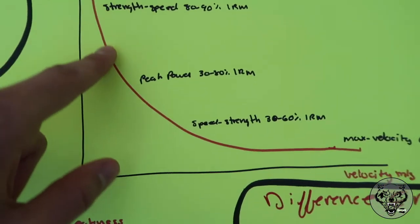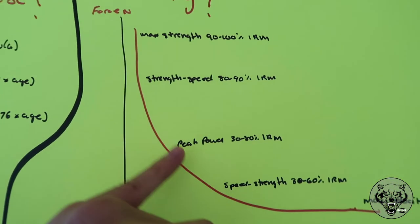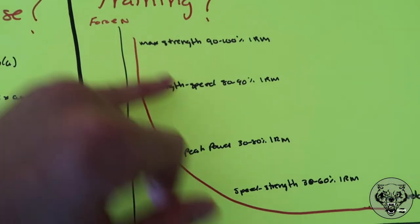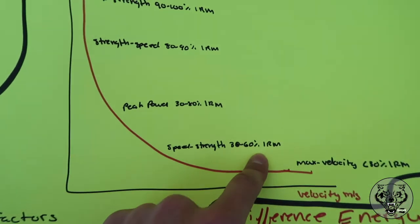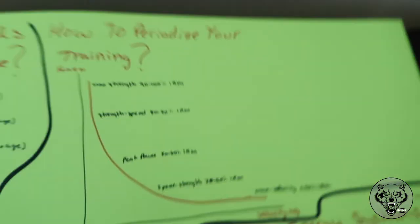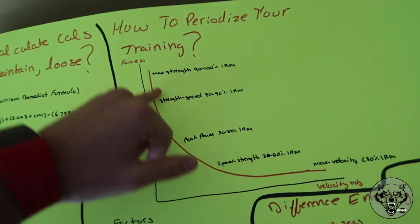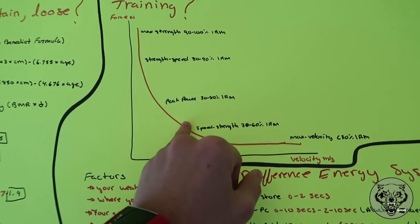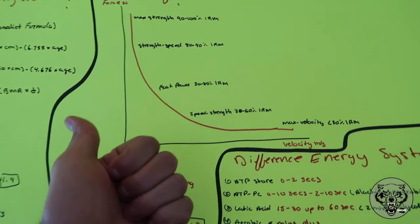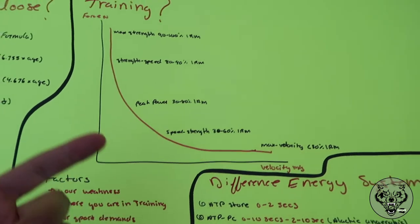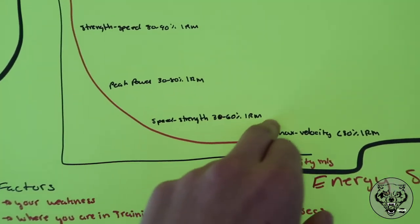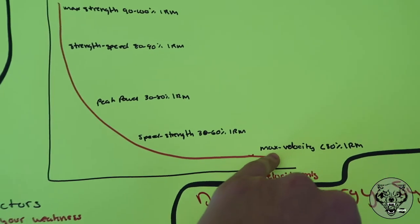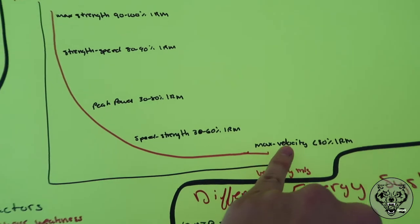For a boxing athlete, you typically want to be around the middle of that curve. You don't want to be super fast and not strong enough, and you don't want to be insanely strong and too slow. Hovering around peak power — your fight and fight week — is where you want to be. During actual boxing training, you tend to sit near the speed-strength end, not at the max strength end.